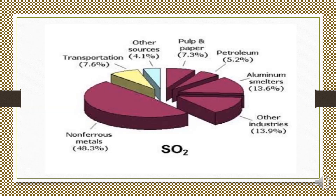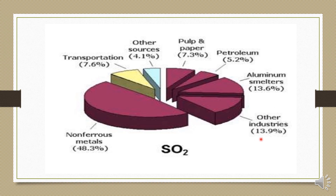In this chart, different sources are shown along with their percentage contributions to SO2 production. Non-ferrous metals contribute about 48.3% of SO2 pollution. Transportation contributes 7.6%, other unknown sources 4.1%, pulp and paper industry 7.3%, petroleum refining 5.2%, aluminium smelters 13.6%, and other industries 13.9% of SO2.